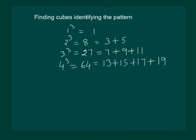Also, we can see that we are starting with the first odd number. After 1, the next odd number is 3, and next is 5. So, 2 cube is written as 3 plus 5.